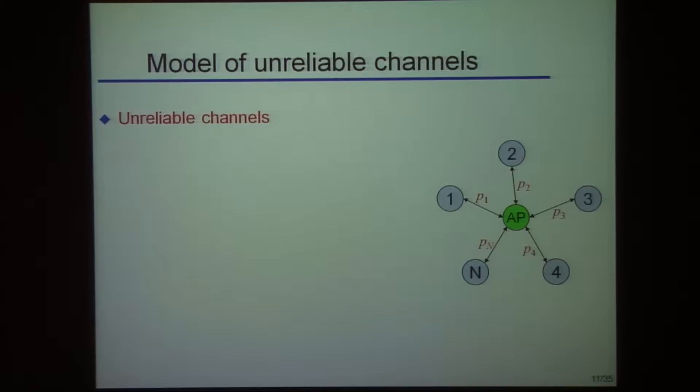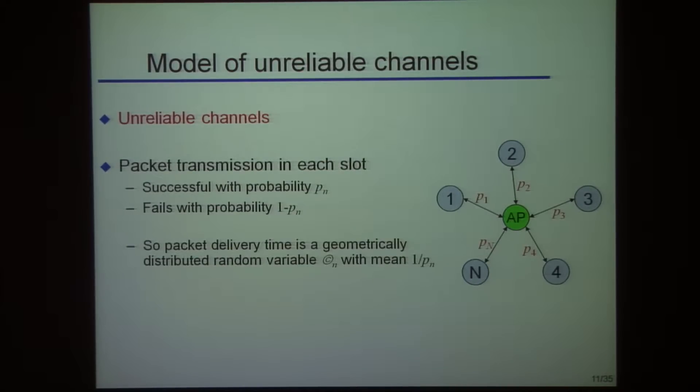Here is the model. There's an access point and a bunch of clients - capital N clients. We assume time is slotted because we want regularity, and packets fit within slots. The access point governs everything. In each slot, the access point sends a packet to one of the clients - a master-slave relationship. For the model of unreliability, let's take a Bernoulli model. When an access point sends a packet to client 3, with probability P3 it arrives there, and with probability 1 minus P3 it does not make it. The time to deliver a packet is somewhat random, and these channels could be of different qualities.